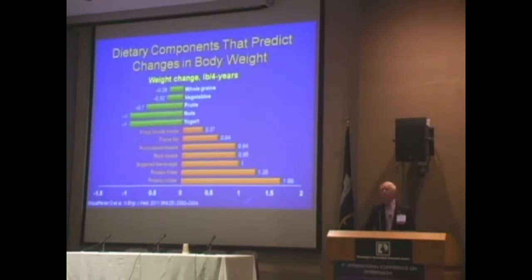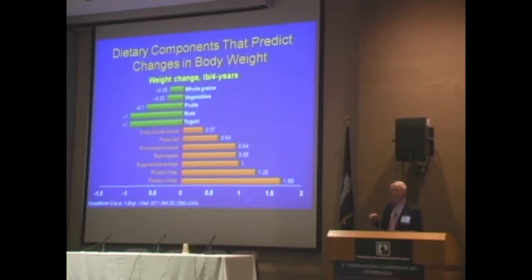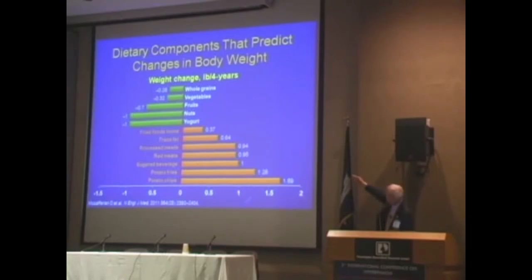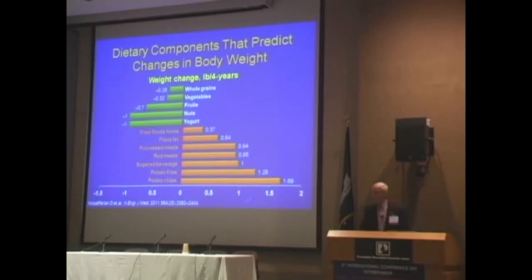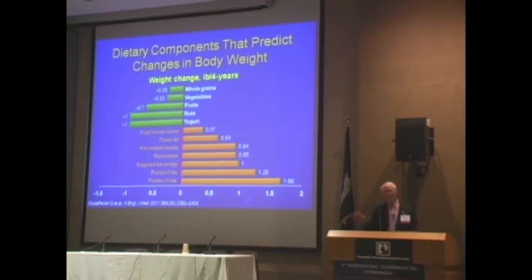Some foods are more likely to produce weight gain than others. From the Nurses' Health Study and Physicians' Follow-up Study published in the New England Journal, yogurt and nuts are particularly beneficial, associated with weight losses. In contrast, fried potatoes and potato chips were associated with nearly one and a half pounds of weight gain per four years. Potato chips and french fries are clearly not preferred foods for people with a weight problem.